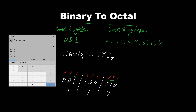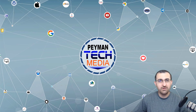Let's confirm in the calculator: Programmer view, BIN selected, enter 1 1 0 0 0 1 0 — and the octal result shows 1 4 2. Remember: for every octal digit we have 3 bits, some turned on and some off depending on the value. For octal 2 we have 0 1 0 (only the 2-bit on), for octal 4 we have 1 0 0 (only the 4-bit on), and for octal 7 all bits would be on: 4 plus 2 plus 1 equals 7. This binary gives us octal 1 4 2.